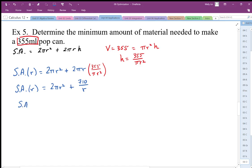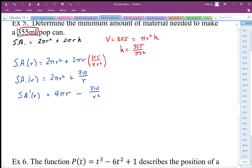I find the derivative and set it equal to zero. I end up with 4πr minus 710 over r². Using the power rule with a power of negative 1 becoming power of negative 2, the coefficient is negative. I make this equal to zero. When the derivative equals zero, I either get a min or a max, so I can solve this equation.